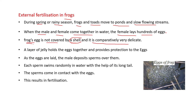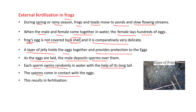There is no hard outer covering on frog eggs. A layer of jelly holds the eggs together and provides protection. As the eggs are laid, the male deposits sperms over them. Each sperm swims randomly in water with the help of its long tail, comes in contact with the eggs, and this results in fertilization.